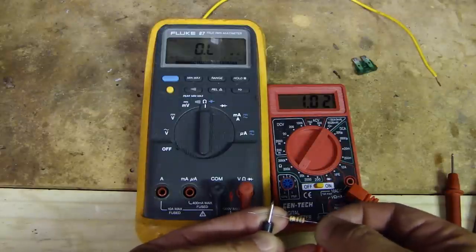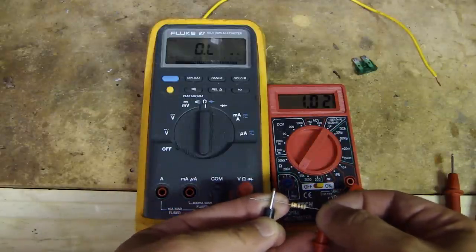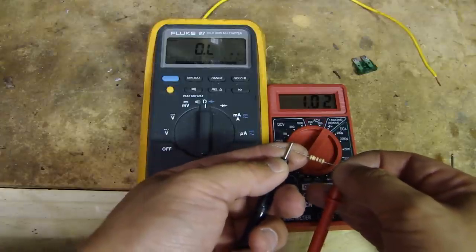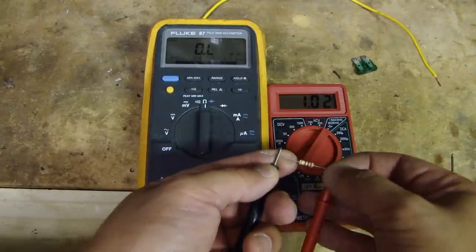Next is I'll use this 1k ohm resistor to measure the resistance through this resistor. As you can see, it's showing 1.02. Now this is in a 20k range, so I know this 1.02 is kiloohm.